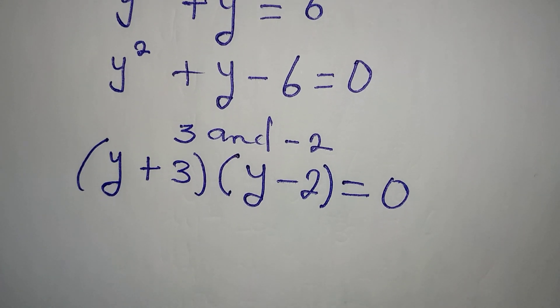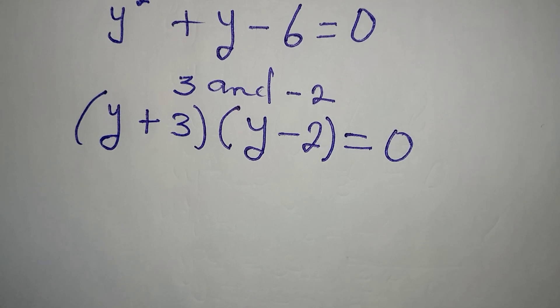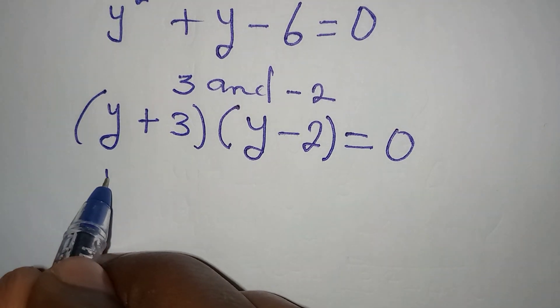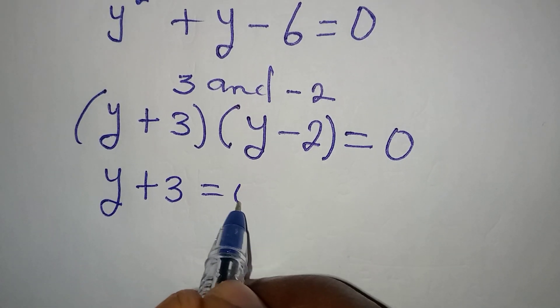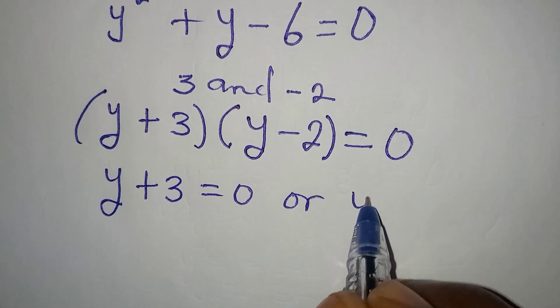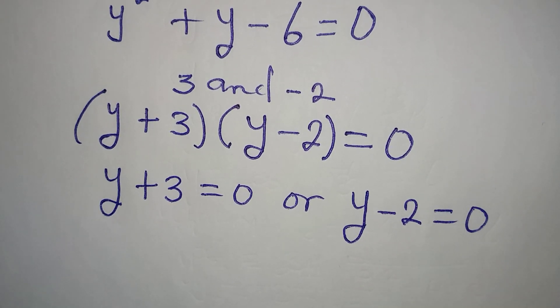Now, what do I do from here? We apply zero product rule. And with the zero product rule, it is either y plus 3 is equal to 0, or y minus 2 is equal to 0.